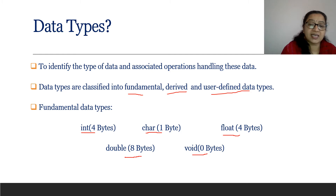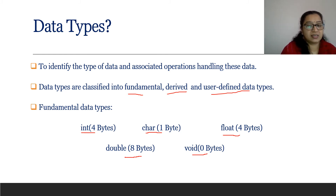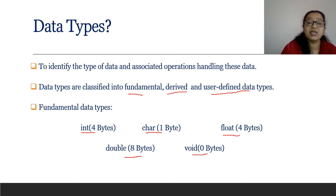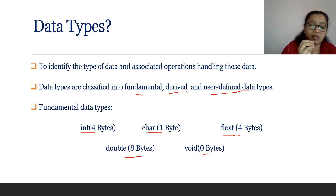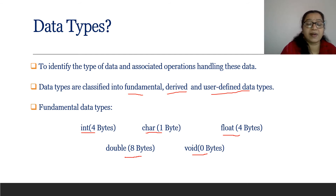Int means only integer values — numbers without a fractional part — and we get 4 bytes of memory. Char stores a single letter and gives 1 byte. Float allows fractional or decimal numbers, also 4 bytes. Double is used to store numbers larger than the range of float, giving 8 bytes of memory space.